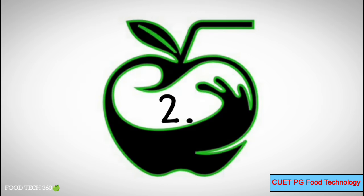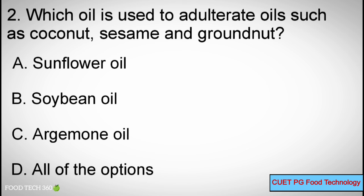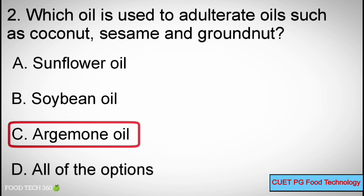Question number 2. Which oil is used to adulterate oils such as coconut, sesame and groundnut? Options: A. Sunflower Oil, B. Soybean Oil, C. Argymone Oil, D. All of the options. Correct answer: C. Argymone Oil.